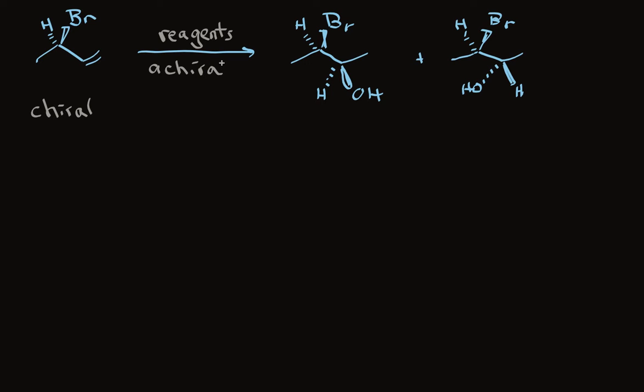We're making two products in unequal amounts. If we assign stereochemistry using the Cahn-Prelog-Ingold rules with bromine and this carbon and this carbon and that stereogenic center is R,